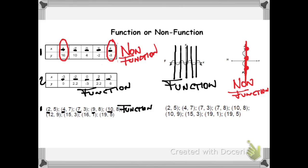Now in my second set of points, I notice that my x values are 12, 15, 16, and 19. None of them are repeated, so the possibility of the same x value being paired with different y values does not exist. So this is a function.